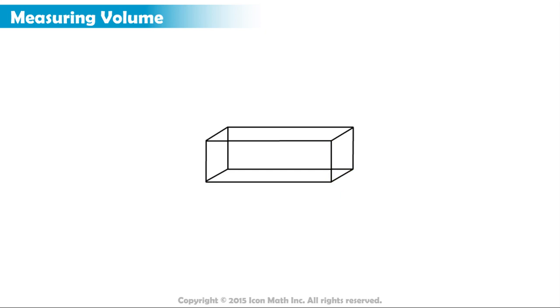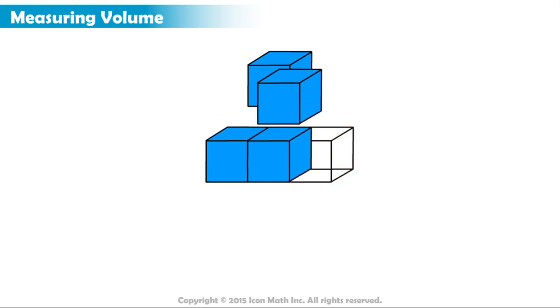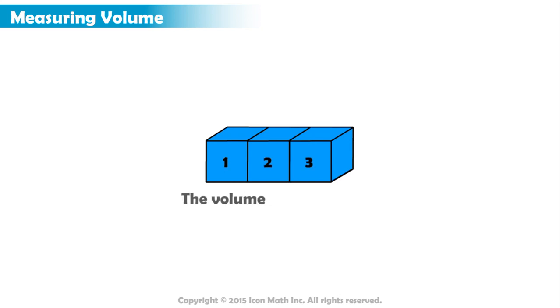As we learned earlier, we can use unit cubes to determine the volume of three-dimensional figures. For example, this rectangular prism is made of three unit cubes. So its volume is three cubic units, or three units cubed.